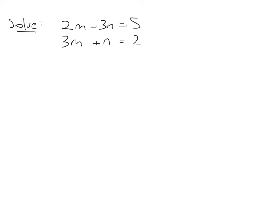Next example — again using elimination. I need to get rid of either the m or the n, and to do that I need them added together where one is a plus and one is a minus with the same number in front. Looking at m and n, one is a plus and one is a minus, which looks promising, but they don't both have a three in front of them. So I'll multiply the bottom equation by three, giving me nine m plus three n equals six.